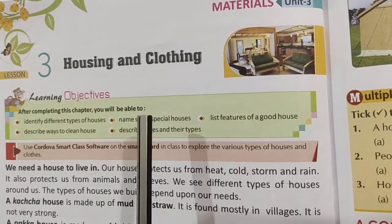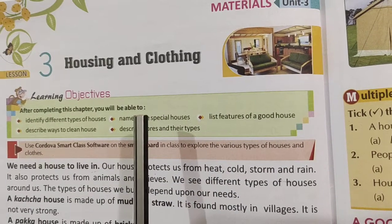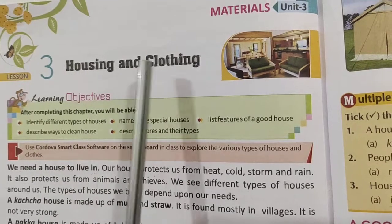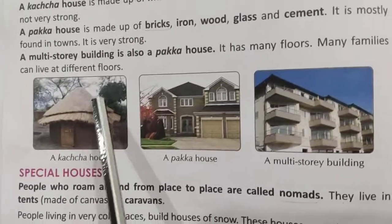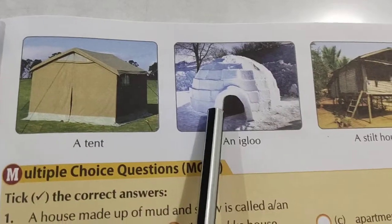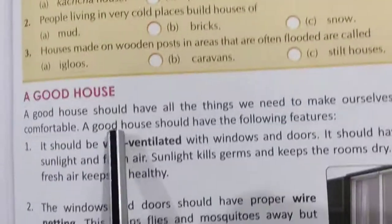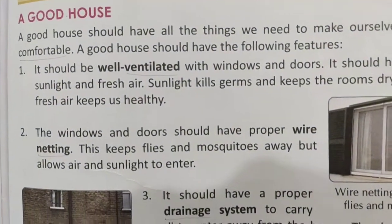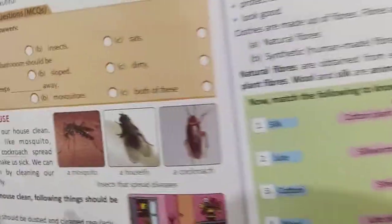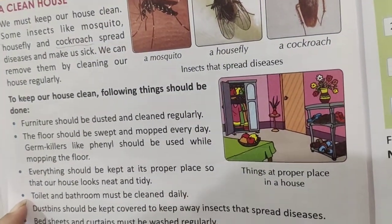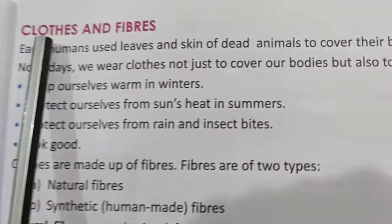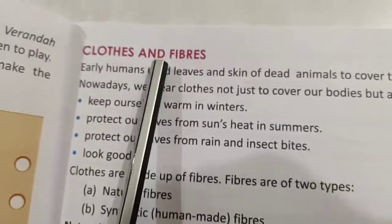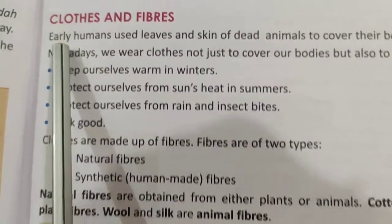Good morning students, welcome to Pioneer Convent School. In the last video we started housing and clothing. We studied different types of houses like kacha house, pakka house, multi-story building, tent, igloo, and stilt house. We also studied the features of a good house and how to keep a house clean. Now we will start clothes and fibers.